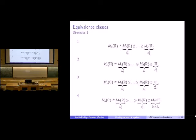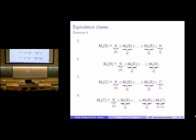For dimension four, we can apply the double centralizer theorem, which quickly reduces the problem to the dimension-one case. As you can see, in the first factor the representative is just the quaternion algebra with the trivial grading—which is of course a division grading—and for the rest, for every equivalence class we have the correspondence: real, quaternion, and two complex.